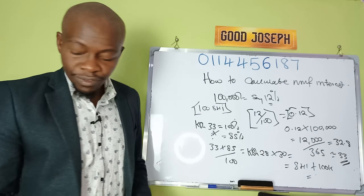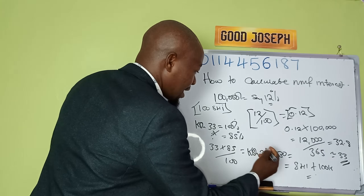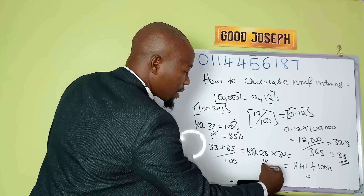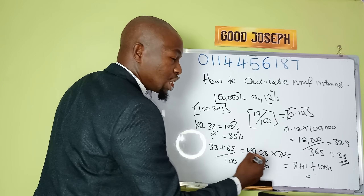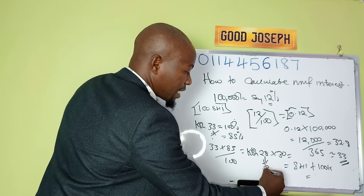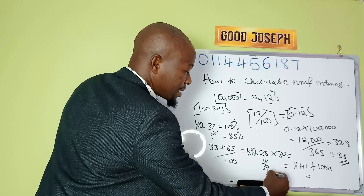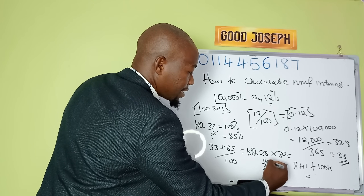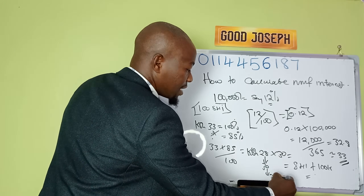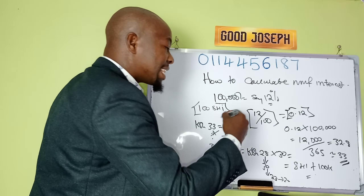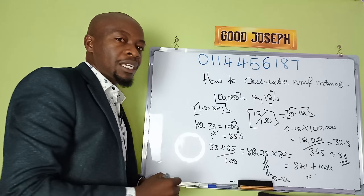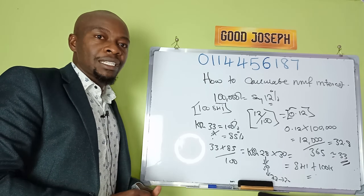So the next month we will get around — the first month we got 28, this month we get 30 shillings every day, then the next one perhaps 33, then 35. That is compound interest — keep on increasing, keep on increasing.